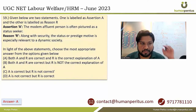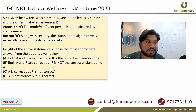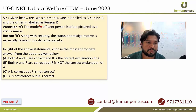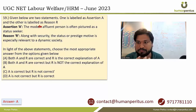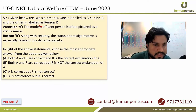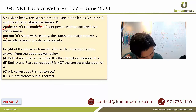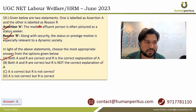The assertion says that the modern affluent person is often pictured as a status seeker. Status is perceived in association with the affluent person, along with security, the state rate or prestige motive, especially relevant to a dynamic society — this is a correct explanation. So both A and R are correct and R is the correct explanation of A.